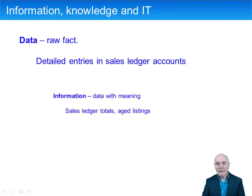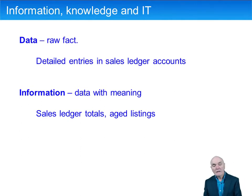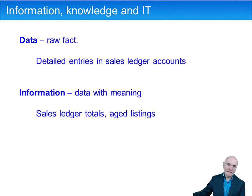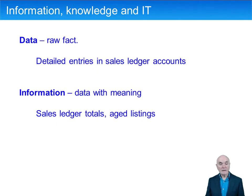First of all we need to distinguish between data and information. Data is basically raw fact. So if you had a list of just every outstanding invoice — perhaps a list in date order or a list in sequential invoice number — that would be data. It would be correct, and this can be used to make the detailed debits in the customers' accounts.